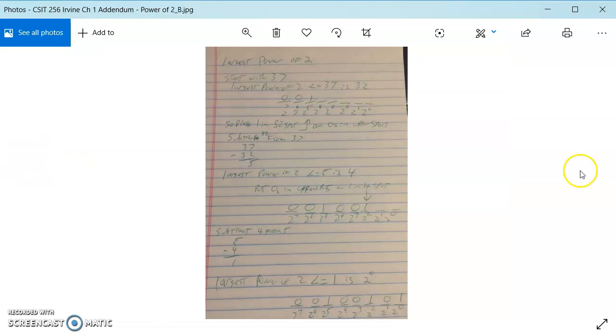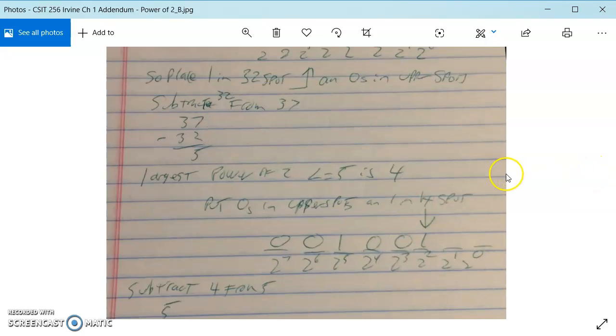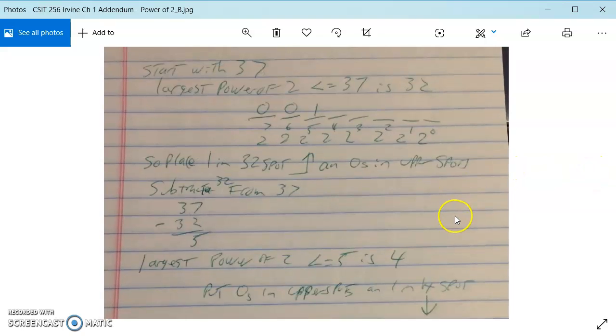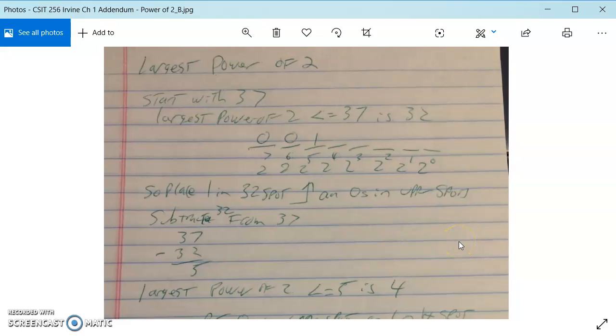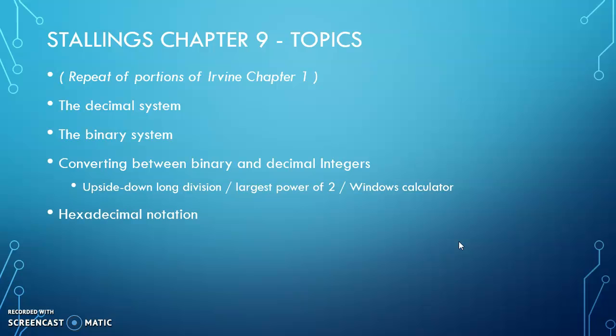One of the additional addendums I have is the largest power of 2 method. So it's a different approach than what the book uses in terms of being able to do the calculations.